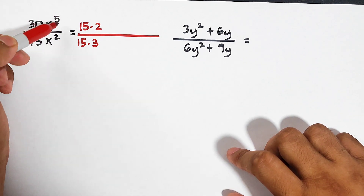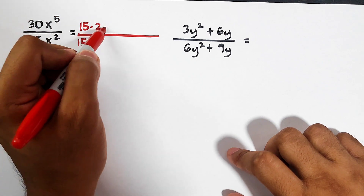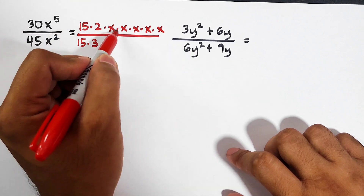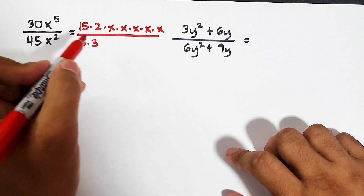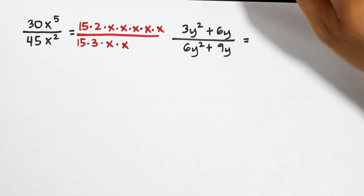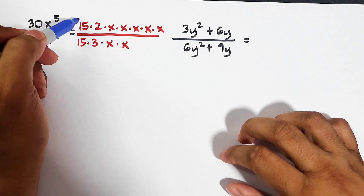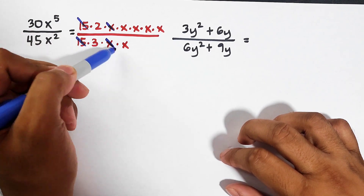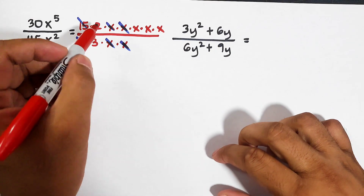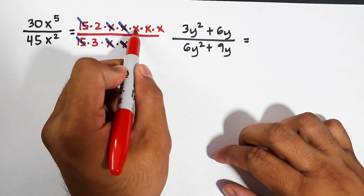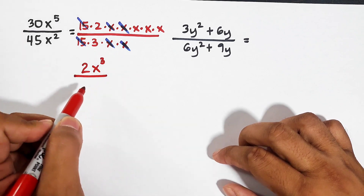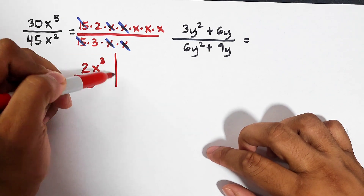Before that, let's expand x to the fifth power: it becomes x times x times x times x times x. And x squared can be factored as x times x. We then eliminate the same factors from the numerator and denominator, canceling pairs of x. What remains is 2 times x cubed, giving us 2x to the third power over 3.